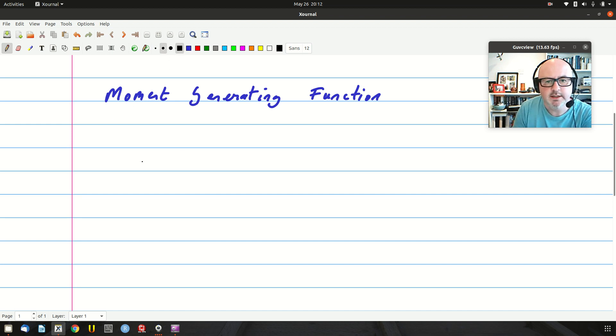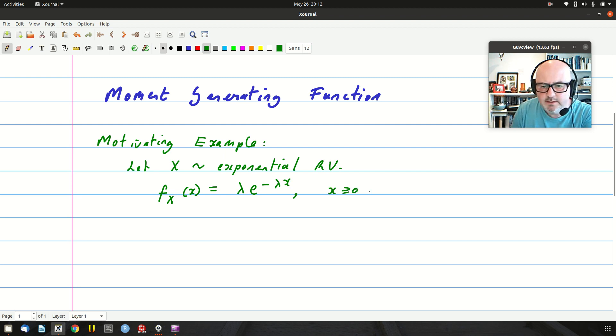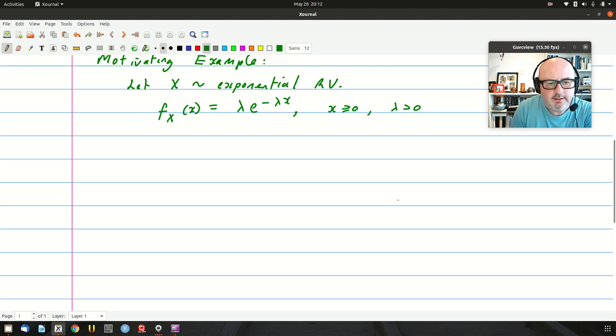So Moment Generating Functions. I'll change to my normal pen size and the right color. And maybe green. And say we might start with a motivating example. Let x be distributed as an exponential random variable. So we have f(x), the probability density function, is equal to λe^(-λx), and we say x is non-negative and λ is positive. And the students would be well aware of this. And so what we want to do, aim is to find the mean and variance of x. In other words, expressions for the mean and variance of x. That's what I want to do.